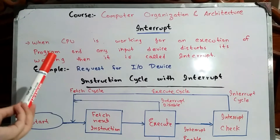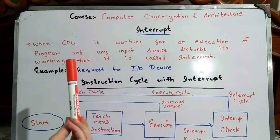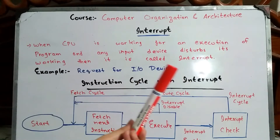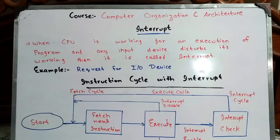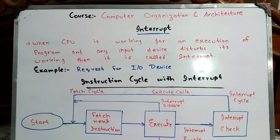The definition of interrupt: once the CPU is working on the execution of a program and any input device disturbs its working, then it is called an interrupt. There is a CPU executing the program. For input or output, we have input devices such as a mouse and keyboard, and output devices such as a printer or monitor.